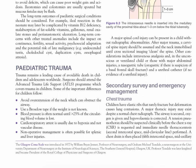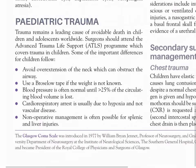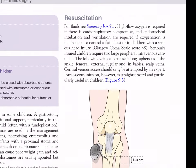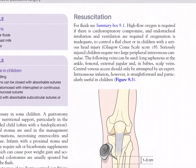Paediatric Trauma. Trauma remains a leading cause of avoidable death in children and adults worldwide. Surgeons should attend the Advanced Trauma Life Support programme, which covers trauma in children. Important differences for children include: avoid overextension of the neck, which can obstruct the airway; use the Broselow tape if weight is not known; blood pressure is often normal until more than 25% of circulating blood volume is lost; cardiorespiratory arrest is usually due to hypoxia and not vascular disease; non-operative management is often possible for splenic and liver injuries. High-flow oxygen is required if there is cardiorespiratory compromise. Endotracheal intubation and ventilation are required if oxygenation is inadequate, to control a flail chest, or in children with serious head injury — Glasgow Coma Scale score ≤8. Seriously injured children require two large peripheral intravenous cannulae.